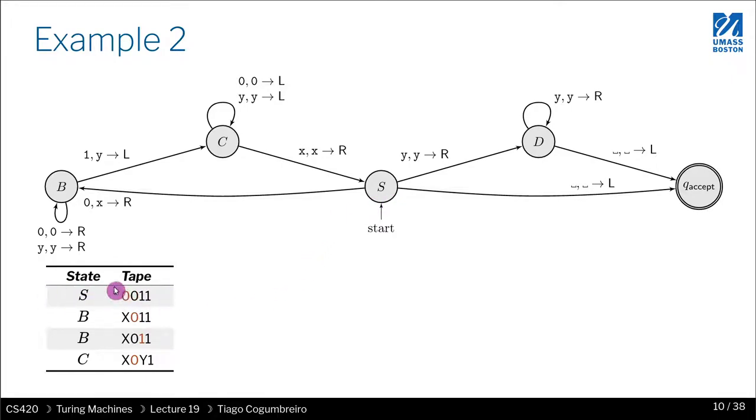So in this table, what you see is what is known each row represents the configuration. Why does it represent the configuration? Because you have everything you need to know to be able to resume the computation. So let's say we are in this row. What that means is the current state is in S. Our memory is currently going to read zero and its contents are 0011. So that is everything you need to know to be able to advance to the next state.